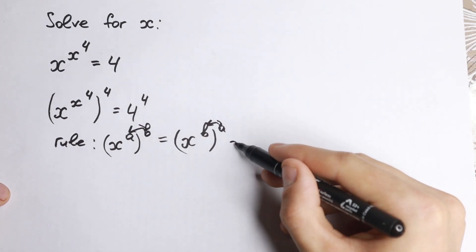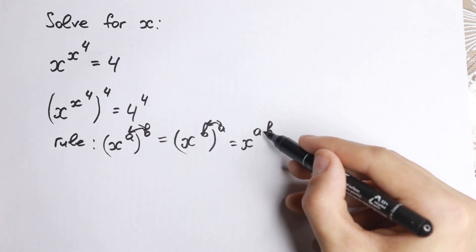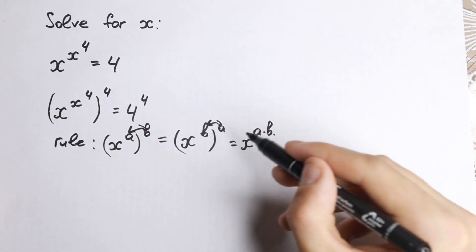Why can we do this? Because it is equal to x to the power a times b, and a product can be written as a times b or b times a. This rule is really good for us.